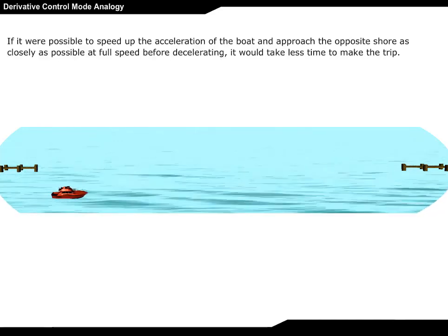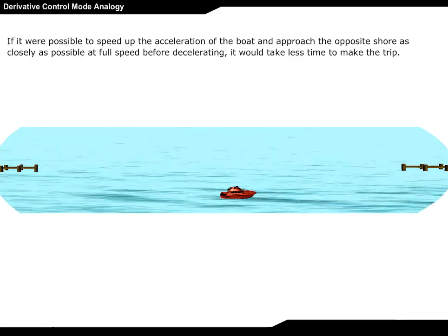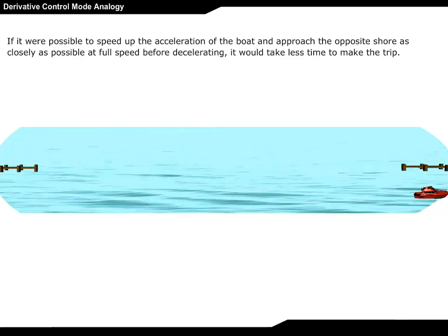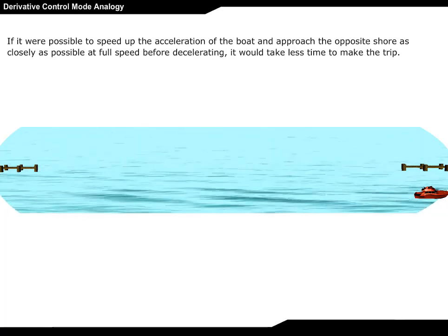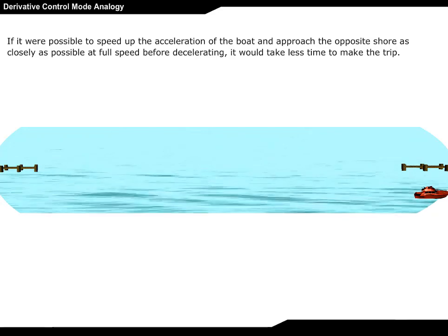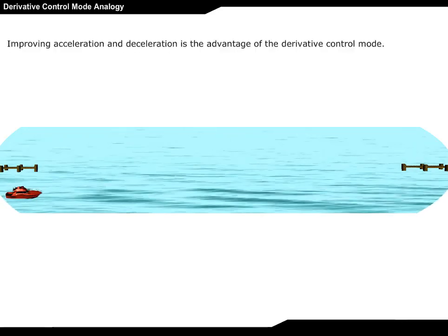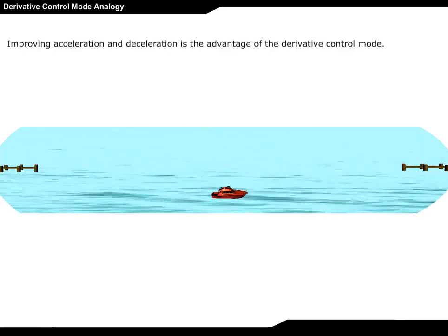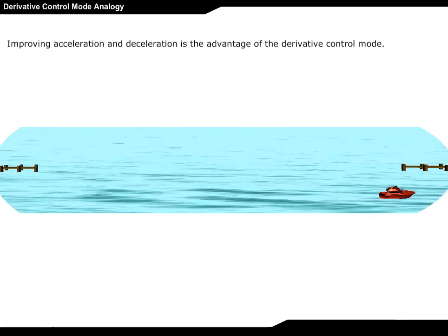If it were possible to speed up the acceleration of the boat and approach the opposite shore as closely as possible at full speed before decelerating, it would take less time to make the trip. Improving acceleration and deceleration is the advantage of the derivative control mode.